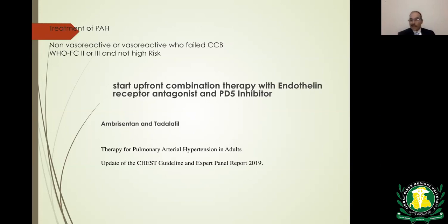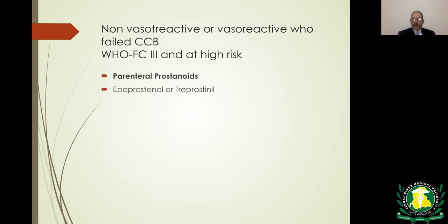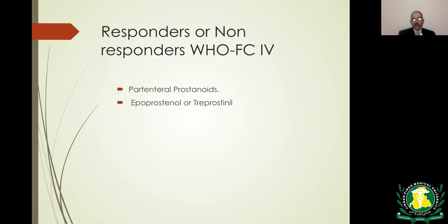Non-responders in functional class 3 but at high risk — those likely to deteriorate faster — should be started on parenteral prostanoids, either epoprostenol or treprostinil, given by continuous IV infusion. A Hickman or permanent catheter must be placed. Epoprostenol generally needs to be replaced every 24 hours while treprostinil can be refilled every 48 hours. Non-responders or responders in functional class 4 must also be treated with parenteral prostanoids — either epoprostenol or treprostinil.